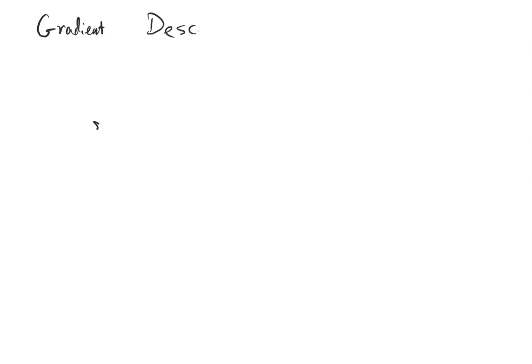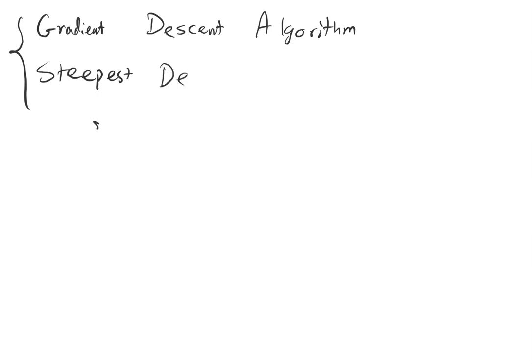In this lecture, we are going to talk about the gradient descent algorithm and steepest descent algorithm. Both of these algorithms rely on the first-order approximation of the function and the first-order gradient to find the iterative updates, and update your solution towards finding an optimal solution to a given optimization problem.